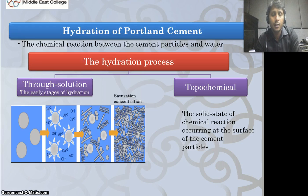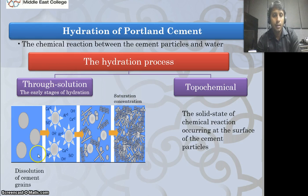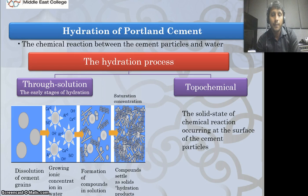Hydration of Portland cement means the setting and hardening of cement — the chemical reaction between cement particles and water. The hydration process occurs in two ways: through solution and topochemical. Through solution: dissolution of cement grains occurs first, then growing ionic concentration in water, then formation of compounds in solution, and finally compounds settle as solids — known as hydration products. Topochemical refers to the solid-state chemical reaction occurring at the surface of the cement particle.